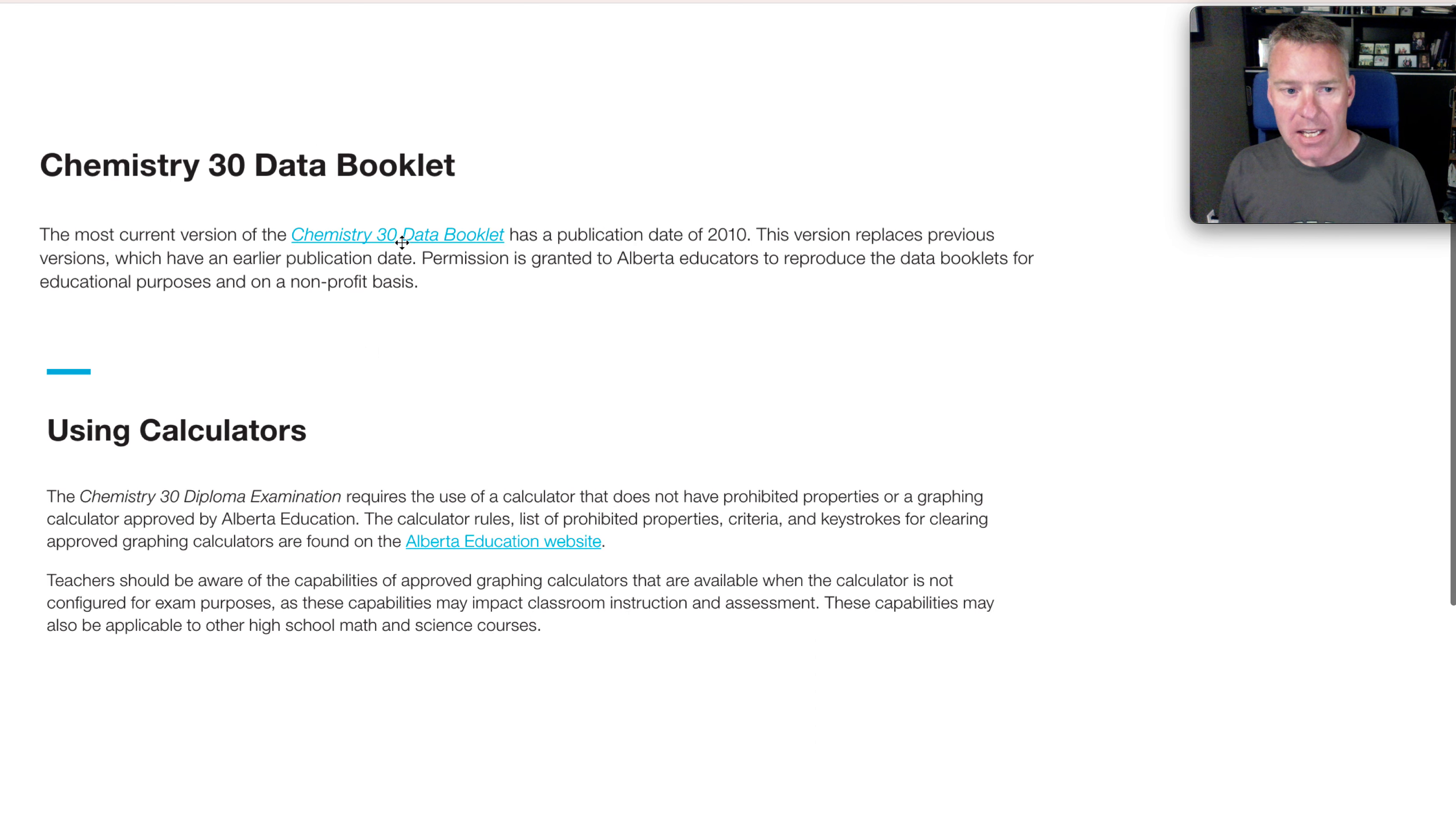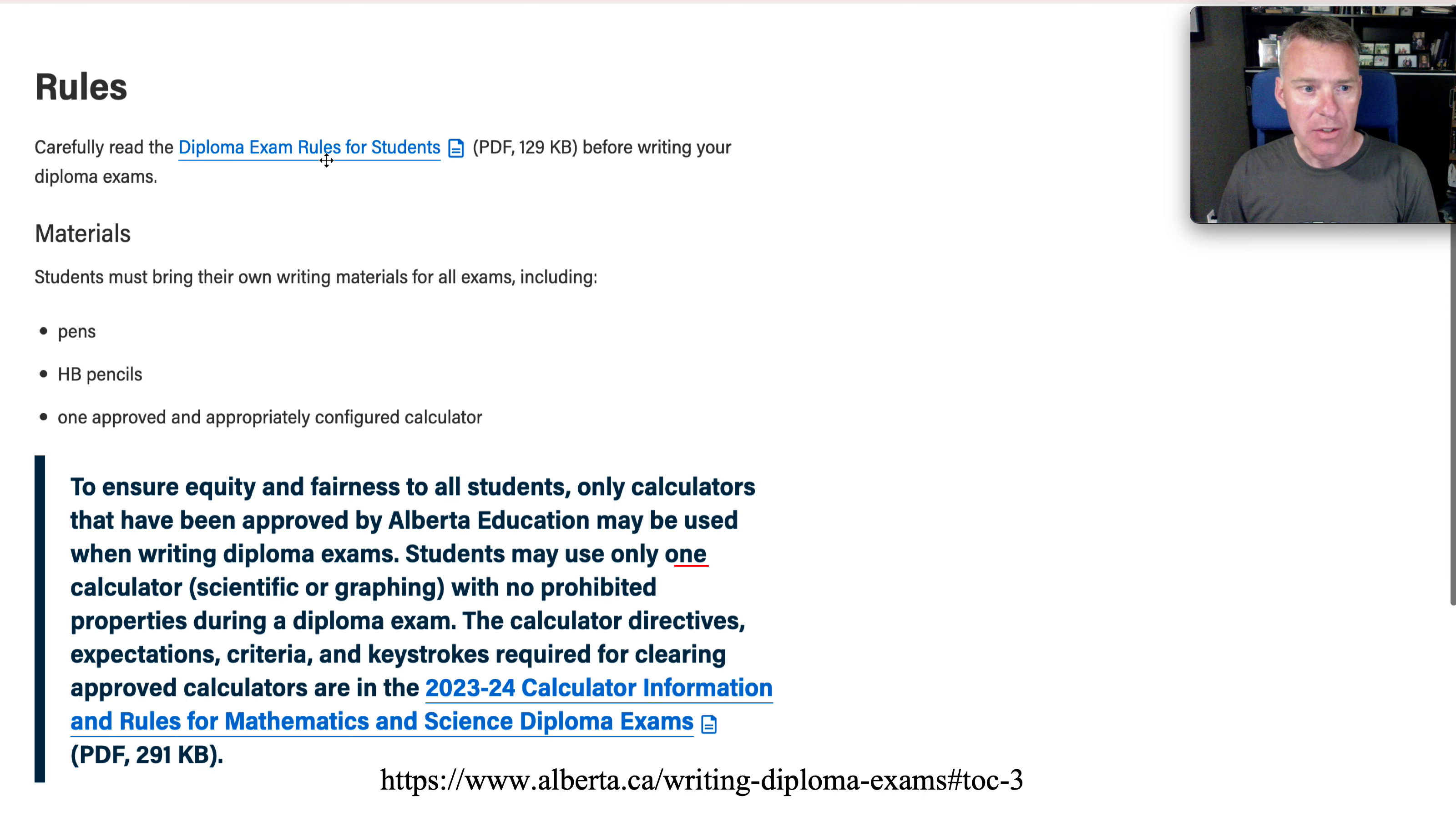You will get a CHEM30 data booklet as previously mentioned. It's got an orange cover and it's quite old. It's the one from 2020. So if you've been using an orange data booklet, you'll be getting a very similar one.